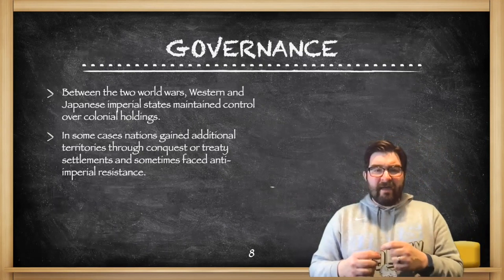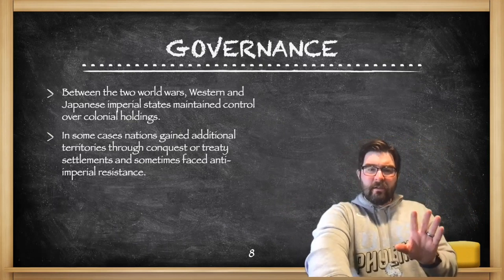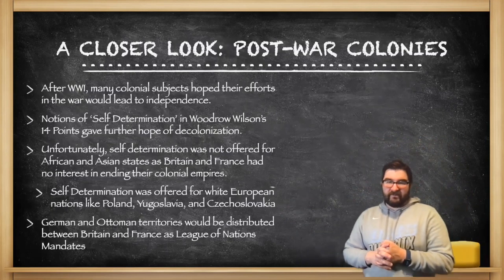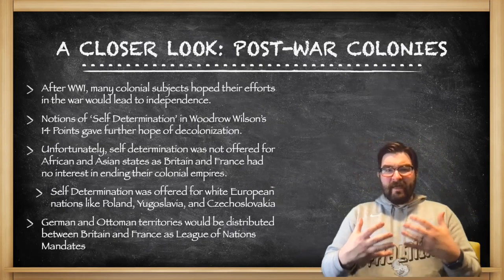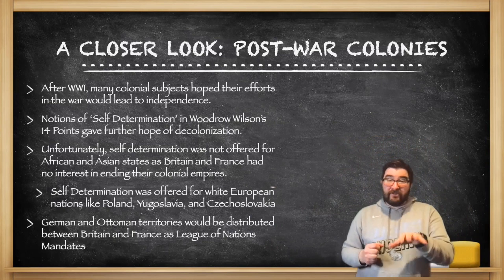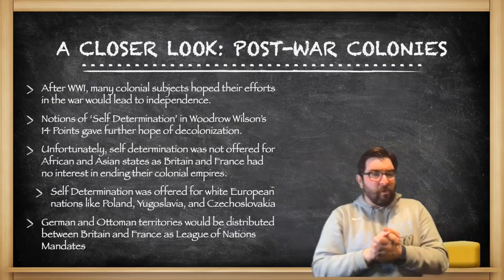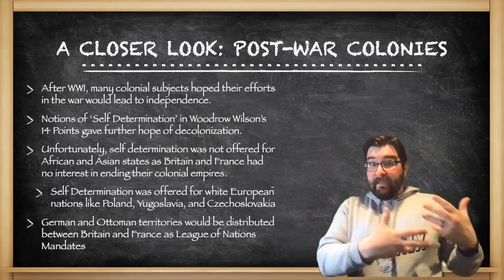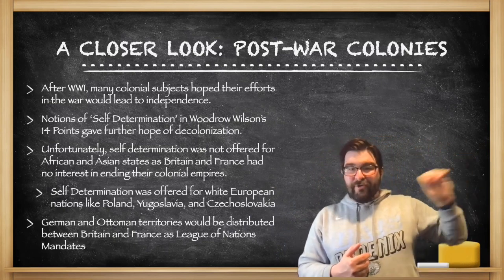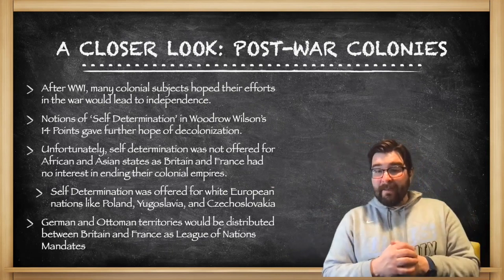Moving into 7.5 — between the two world wars, Western and Japanese imperial states maintained or even grew their colonial holdings while facing some anti-imperial resistance. After World War I, many colonial subjects had hoped their efforts helping the allies win the war would lead to their independence. There was much talk about self-determination, including in Woodrow Wilson's 14 Points — the idea of letting people decide for themselves how they want to be ruled. Unfortunately, this was offered for white Eastern European nations like Poland, Yugoslavia, and Czechoslovakia, but not for the African and Asian states colonized by Britain and France.